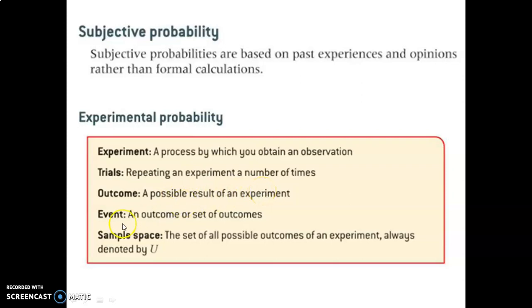An event is an outcome or set of outcomes. And sample space is the set of all possible outcomes of an experiment. We always use the letter U to represent that, which means the universal set or all the possible outcomes.